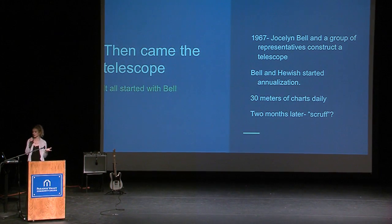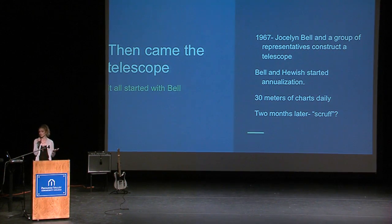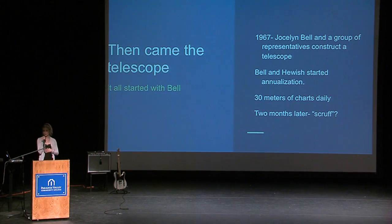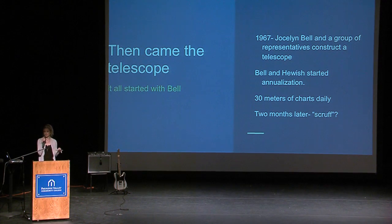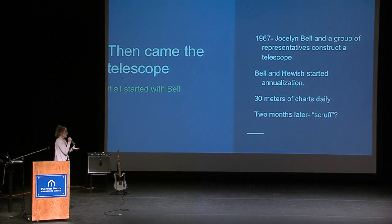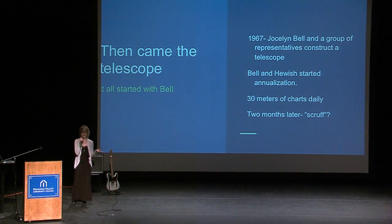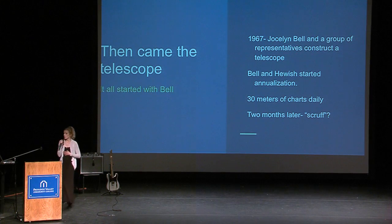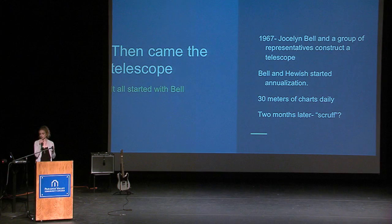So then came this telescope. Jocelyn Bell was the founder of pulsars and she actually found them on accident. She and a group from Cambridge University built a telescope which was ready for use in 1967. Bell and her professor Hewish started analysis and studied these for about two months, ending up with about 30 meters worth of charts daily. Over time, they ended up finding little glitches in their discoveries which they called scruff.